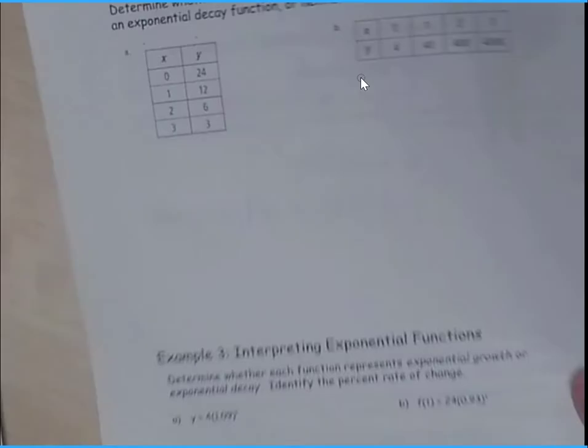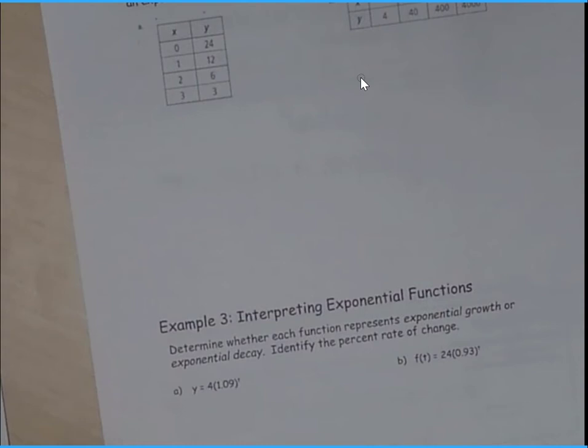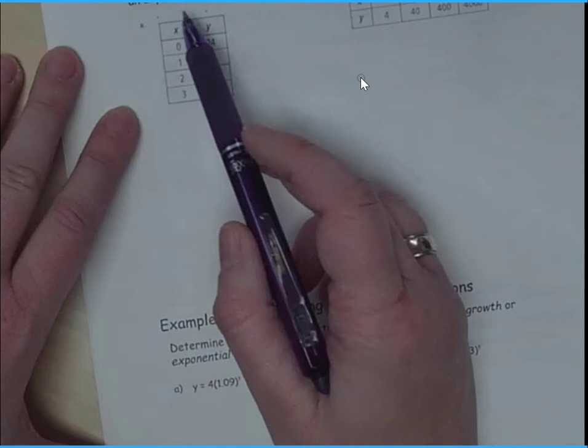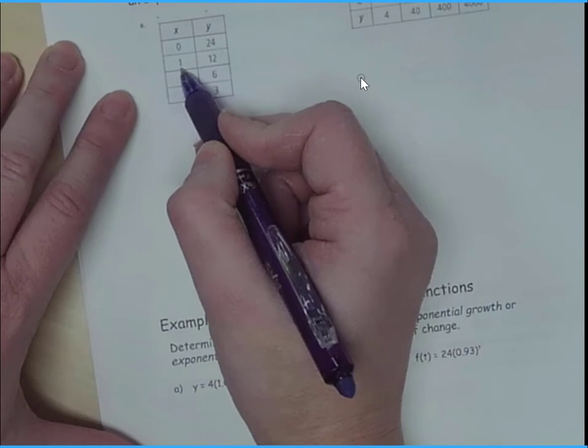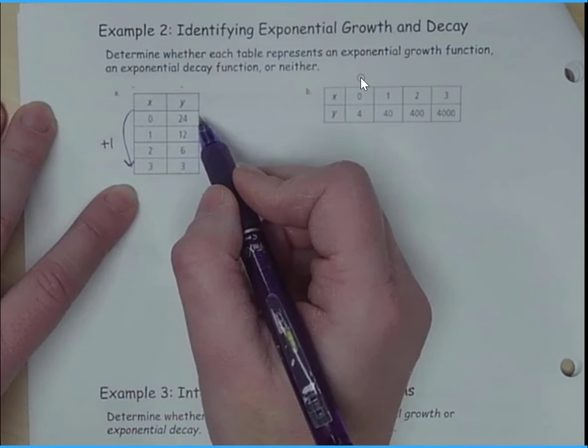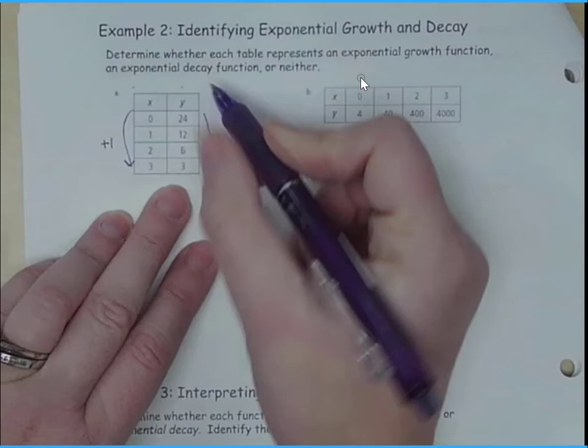So let's figure out if we have a growth or a decay. Determine whether each table represents an exponential growth function or an exponential decay function or neither. So if I look here, plus 1, plus 1, plus 1, so here I'm increasing by 1. So that's good news. Now here it looks like I'm decreasing and it looks like I'm dividing by 2, but remember we're looking at a multiplication factor here. So we want to have a factor here. So dividing by 2 is the same as multiplying by a half. So this is a decay because, well, it's decreasing.